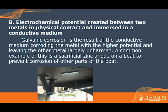Answer choice B is not the correct answer, but it describes galvanic corrosion. Galvanic corrosion occurs when two metals with a high electrochemical difference are placed in contact inside of an electrolytic medium. This causes the more negative electrochemical potential to act as an anode and the more positive one as a cathode, resulting in a system similar to a battery and leading to severe corrosion of the anode. A common example is the sacrificial zinc anode on a boat to prevent corrosion on other parts.